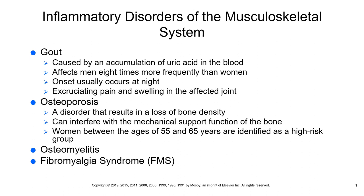Tophi can form in the kidneys, so assess the patient also for tophi in their earlobes, fingers, hands, and toes. Diagnostic tests include serum and urinary uric acid levels, and CBCs. CBC results may show leukocytosis — elevated white blood cells — and may also show anemia of inflammation. Patients will also have an elevated ESR, indicative of inflammation.